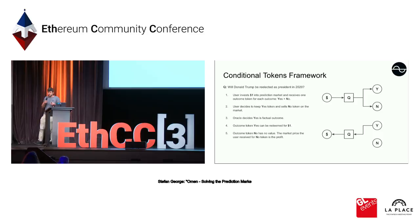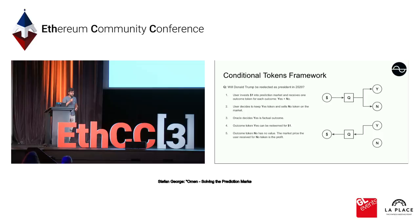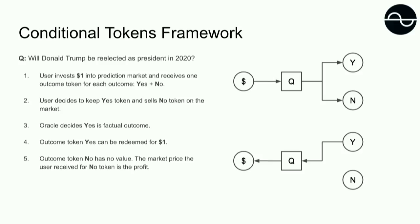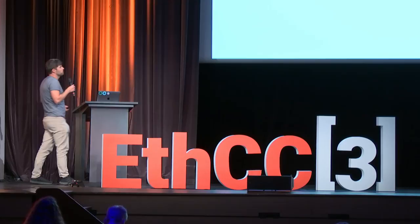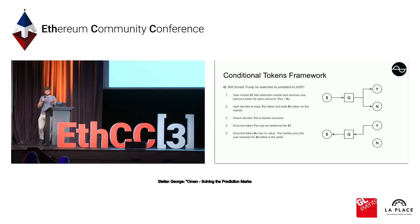The user who wants to trade keeps the token that he believes will represent the factual outcome. So the user believes yes, Donald Trump will be re-elected — he keeps the yes token and sells the no token on the market. Then let's say Donald Trump is re-elected: the oracle reports to the conditional tokens contract that yes, Donald Trump was re-elected. The user can then use his yes token, go to the conditional tokens contract, and redeem the DAI. The no token the user was selling on the market is actually the profit the user made.